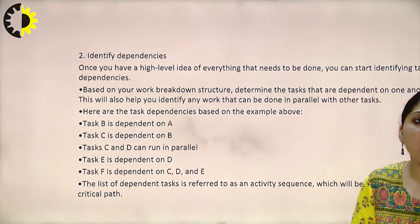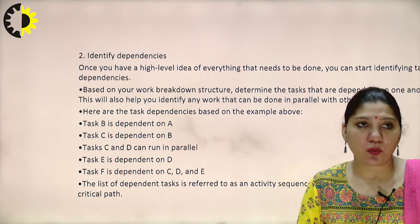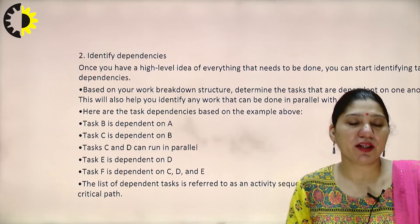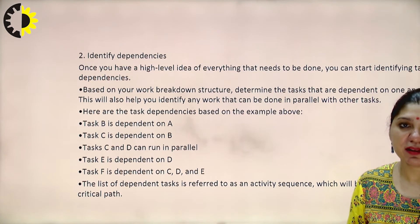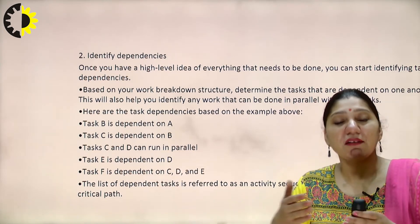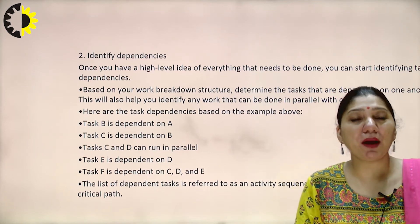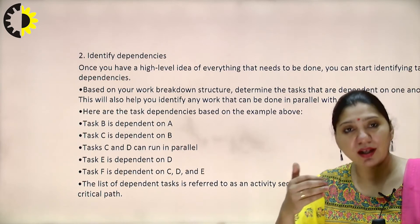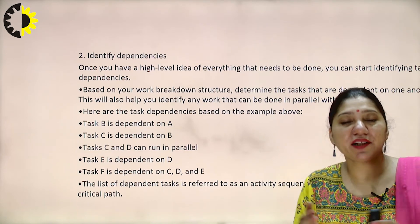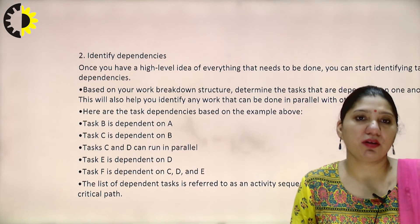Identifying dependencies will also help you identify work that can be done in parallel. Rather than doing tasks sequentially — first, second, third, fourth — which increases project duration and cost, you should identify which tasks can be executed in parallel. This reduces time and cost. Here are the task dependencies from the blog example: task B is dependent on A. Task C is dependent on B. Task C and D can run in parallel — editing the final draft and designing post visuals can be done simultaneously, as they are not dependent on each other.